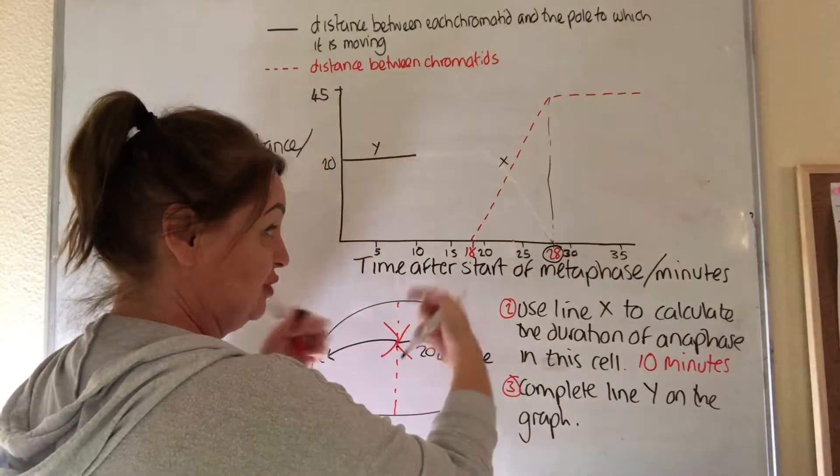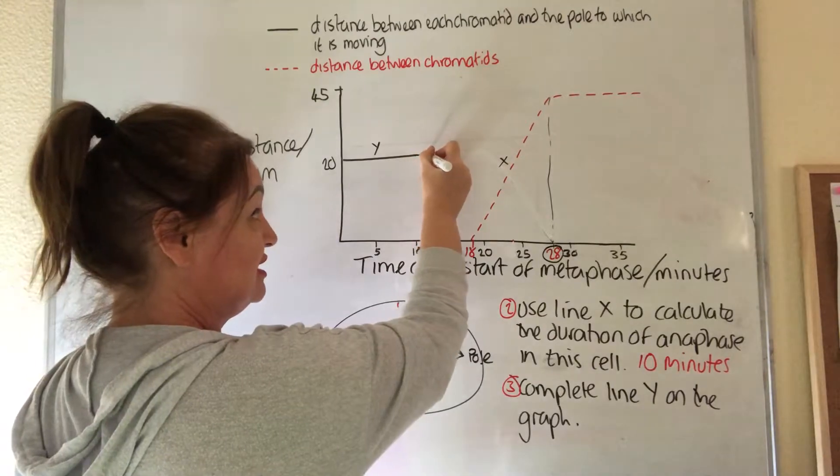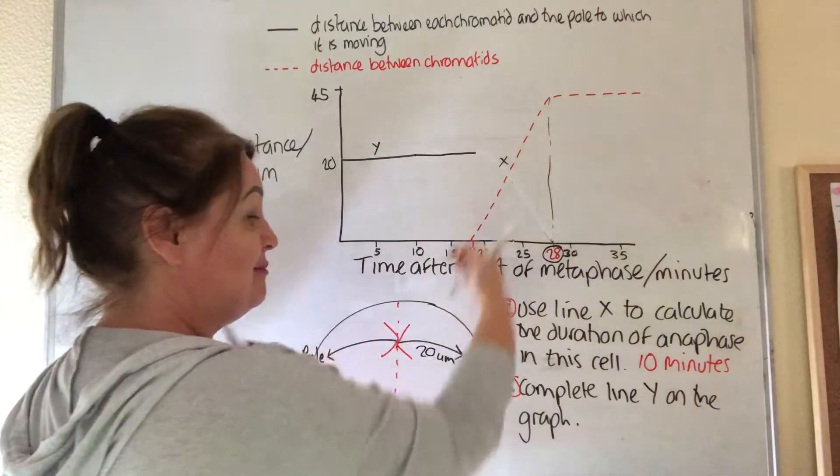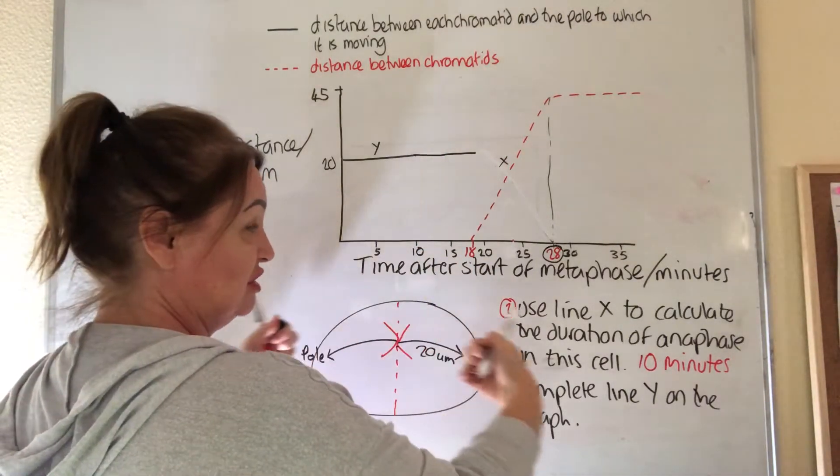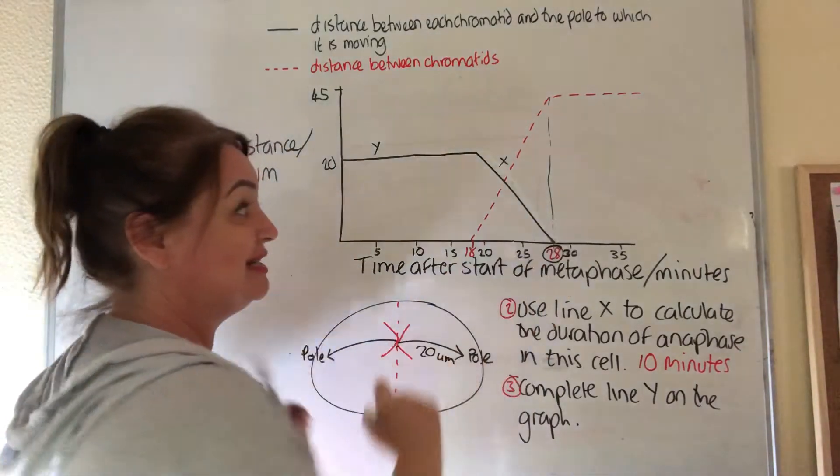In other words, when that distance starts to increase, which is shown by this line here. So this is going to continue across. And then the minute they separate and they start to be pulled apart, it's going to go down to 28 there.